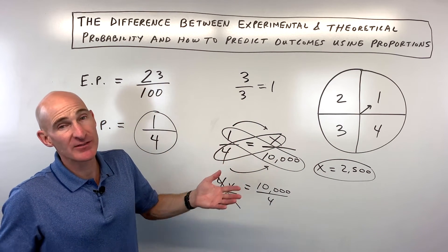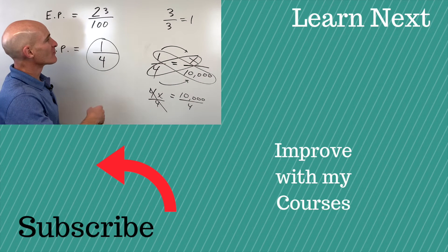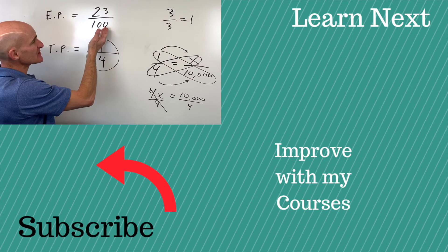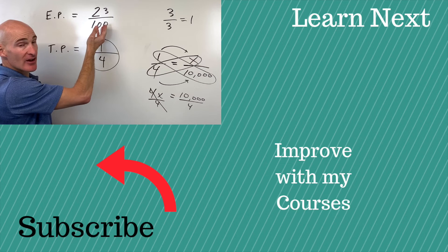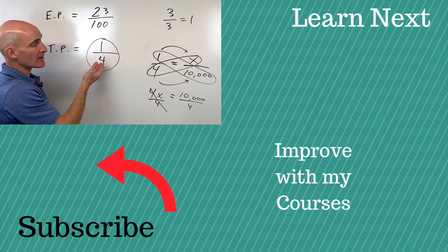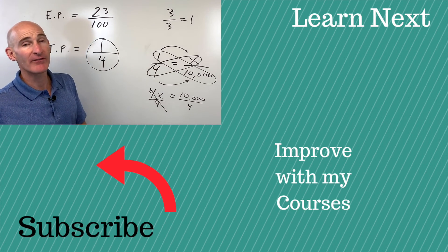But that's not probably typical. And you'll start to see as this goes up to 10,000, 100,000, a million spins, it will start to approach that one fourth or 0.25 probability.